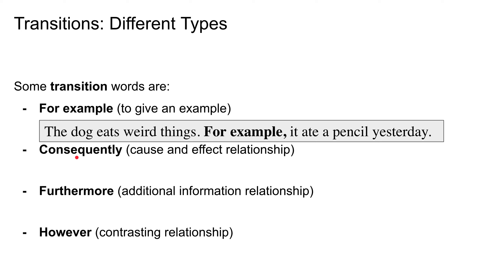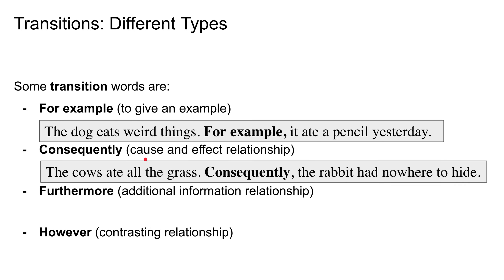Moving on: 'consequently' — we use that for cause and effect relationships. 'The cows ate all the grass. Consequently, the rabbit had nowhere to hide.' Here we can see that the second sentence is an effect of the first sentence.